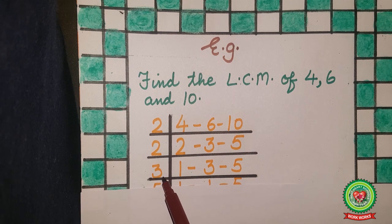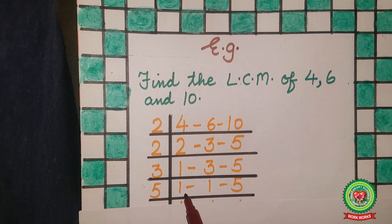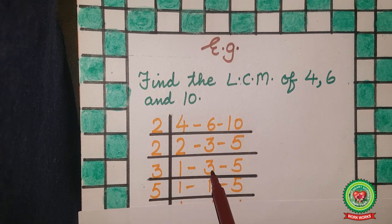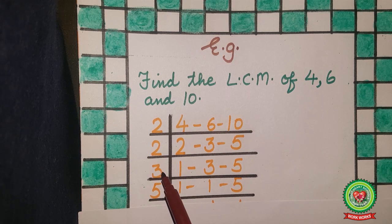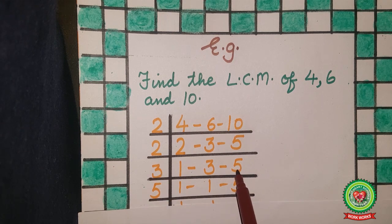Now 3 is a prime number, so divide 3 by 3. On the 3 times table, 3 comes at 1, so below 1 write 1. Below 3, one will come. On the 3 times table, 5 doesn't appear, so bring 5 down as it is.